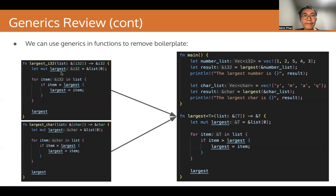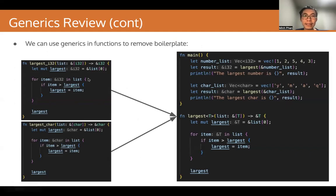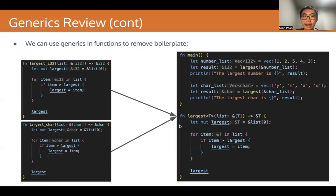Here we have two functions, largest_i32 and largest_char. They both take slices and return the largest value from the slice. As you can see, the two functions have basically the same function signature and same function body, just with different types. So instead of writing two separate functions, we can combine them into a single function that takes a generic argument T — the function largest — and then we just iterate through the slice and return the largest element.